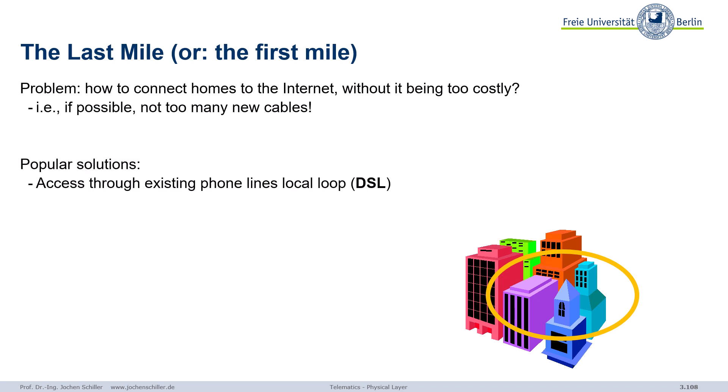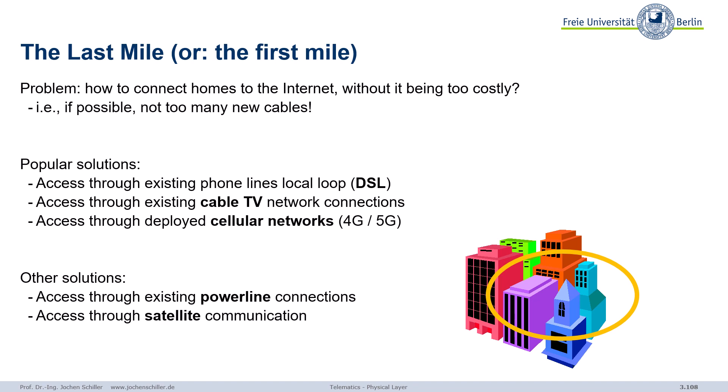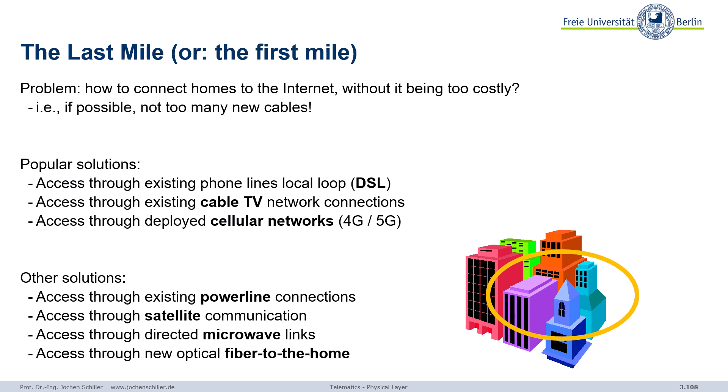Where possible, we try to reuse existing cables. Popular solutions include digital subscriber lines (DSL), reusing cable TV infrastructure, or using deployed cell networks like 4G and 5G — though we won't discuss cell networks here. There are also other solutions we won't cover, such as power line communication, satellite, microwave, and fiber to the home, since fiber to the home is basically the fiber optics already explained extended to your desk, home, or curb.